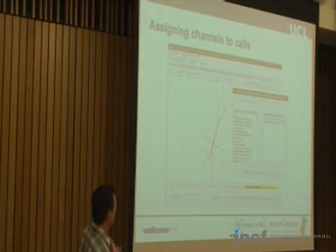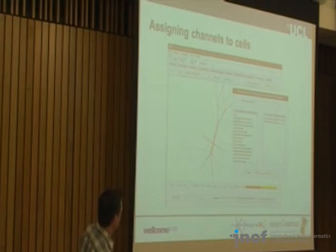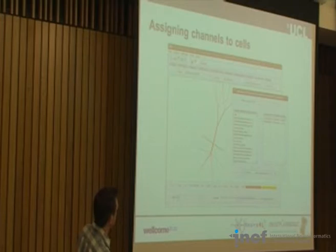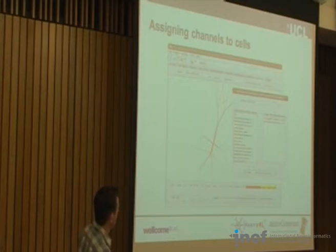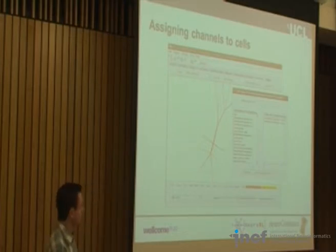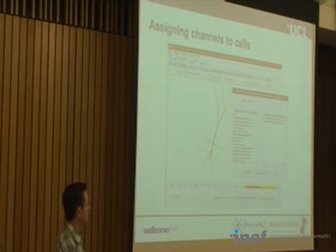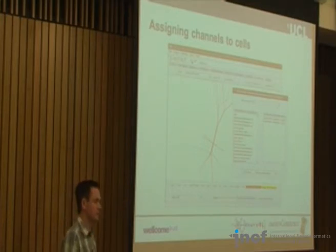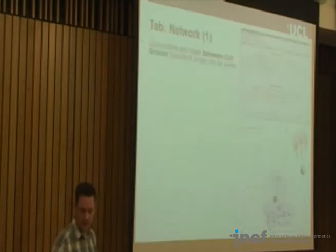That was a single-compartment cell. You can also specify ion channels for detailed multi-compartmental cells — this visualization shows a cell where you specify in different locations on the soma and dendrites the densities of each channel. These individual channels aren't specific to one cell — you can have multiple different cells and distribute channels in multiple different ways. The channels are listed at the cell mechanism tab, and this interface lets you specify which channels are present in which parts of the cell.